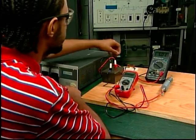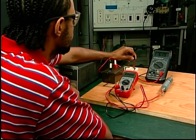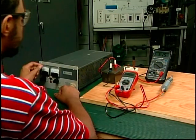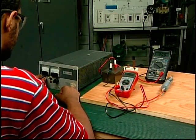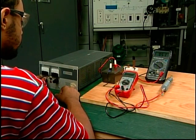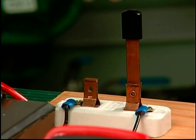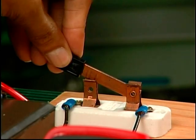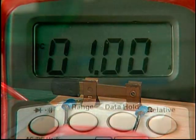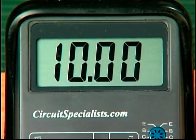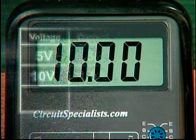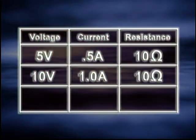Now, let's vary the voltage source from 5 to 10 volts. Open the switch to de-energize the circuit. Increase the power supply to 10 volts. Close the switch and read the values of current and voltage. The current is 1.0 amperes and the voltage is 10 volts. Record the data in the table.